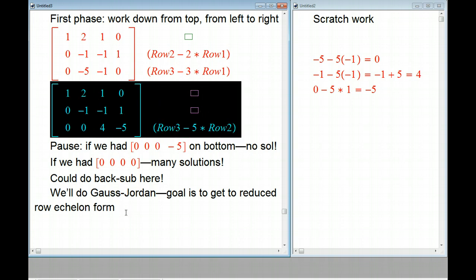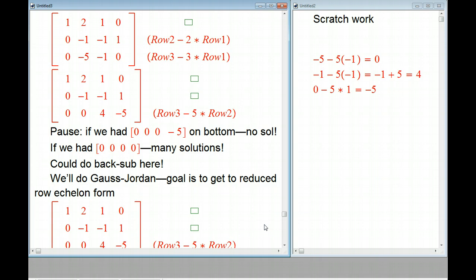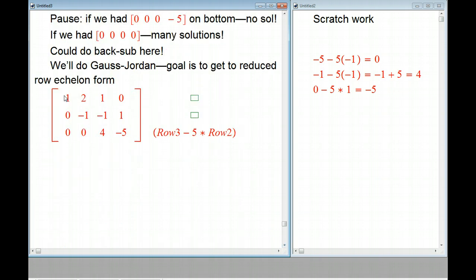We might as well make the pivots equal to one right now. So let's go ahead and do that. That just involves dividing by the pivots. This pivot's already one. That's fine. Here, you just divide by minus one, in other words, just change the signs. And here, we're just going to divide by four. Let's put a one-fourth there. So that's going to turn that into one, and that's going to be a minus five-fourths.